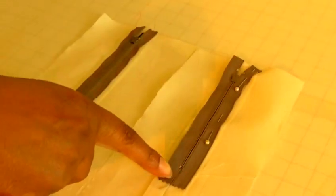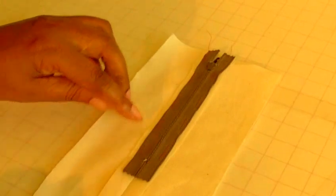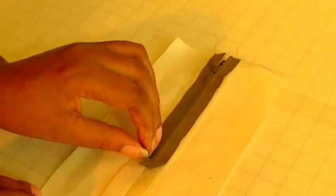So I've gone from pinning my zip into position here. Once you've pinned it into position, you should have this stage and you should have your basting stitch all the way around.